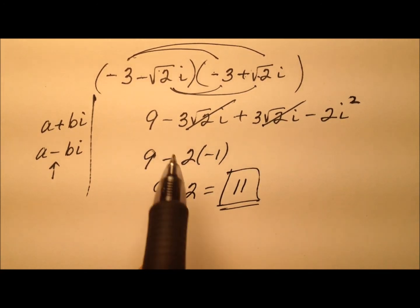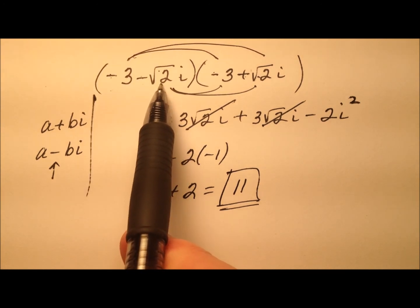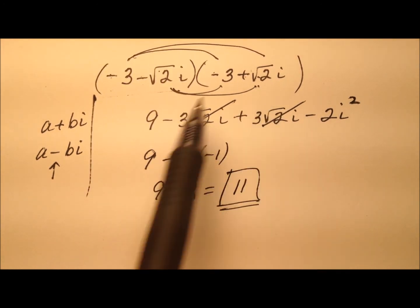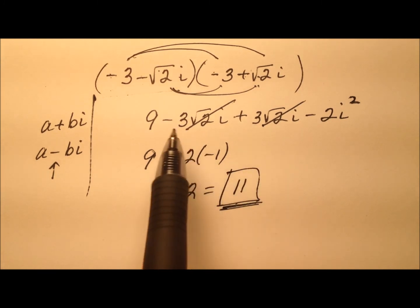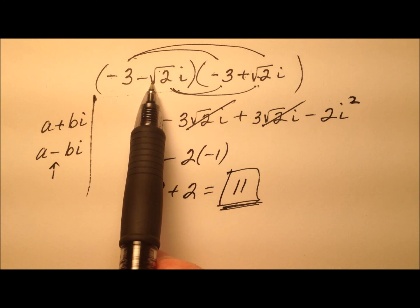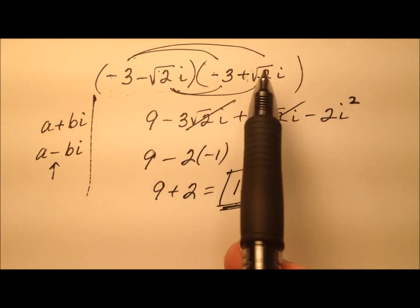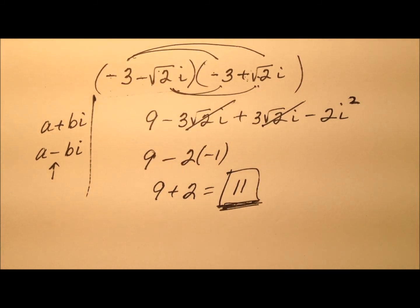So we started with negative 3 minus the square root of 2i. We found the complex conjugate, and we multiplied them together. Worth noting is when you take a complex number and multiply it by its complex conjugate, you will always get a real number.